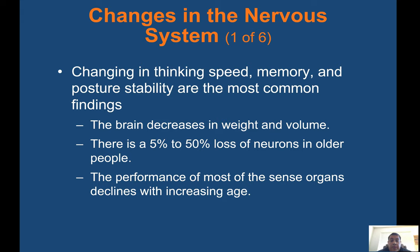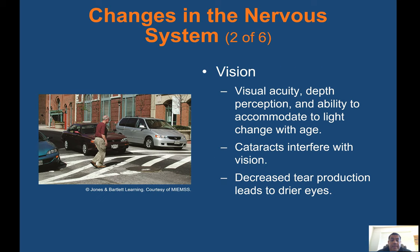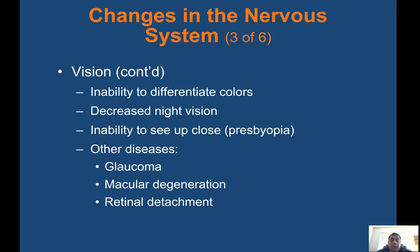Changes in the nervous system: changes in thinking speed, memory, and postural stability are the most common findings. The brain decreases in weight and volume, with a 5–50% loss of neurons in older people. Most sense organs decline with increasing age. Vision changes include decreased visual acuity, depth perception, and ability to accommodate to light. Cataracts interfere with vision, decreased tear production leads to drier eyes, inability to differentiate colors, decreased night vision, and inability to see up close. Other diseases include glaucoma, macular degeneration, and retinal detachment.